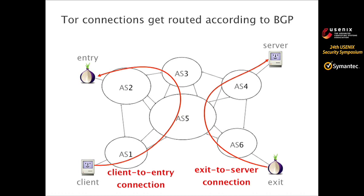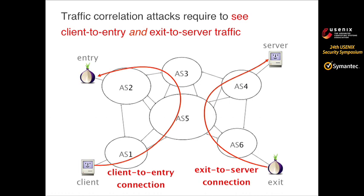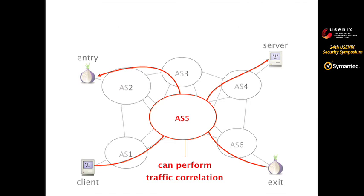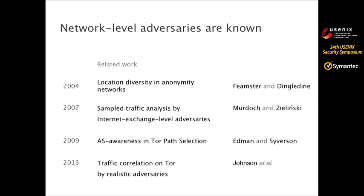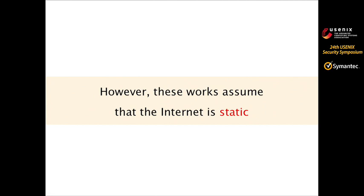Here is a simple internet topology. Say the client is uploading some file to the web server. Tor connections get routed according to BGP and data packets start to flow through the ASes. The traffic correlation attacks require the adversary to see both client-entry and exit-to-server traffic, so it needs to be on both paths. Here, AS5 is on the path at both ends, so it can perform the traffic correlation analysis. Such network-level adversaries are known based on previous work. However, all these previous works assume that the internet is static and that BGP routing does not change, which we know is not the case.